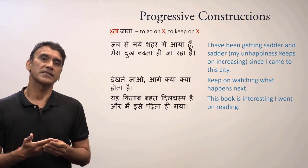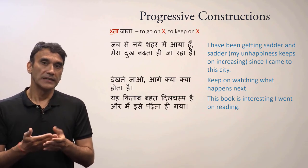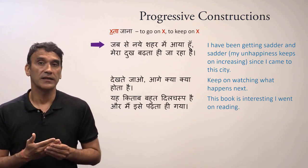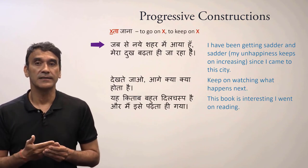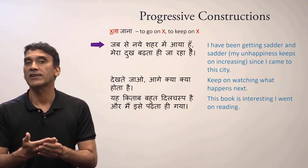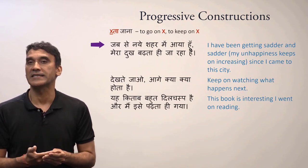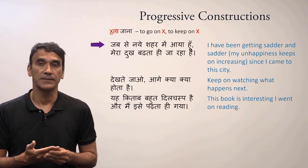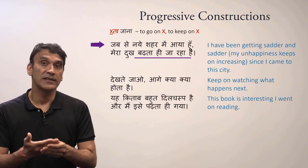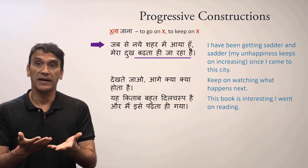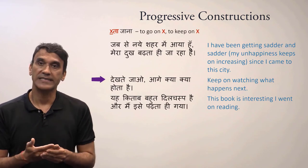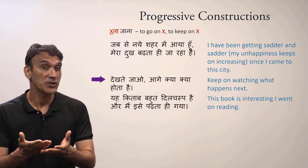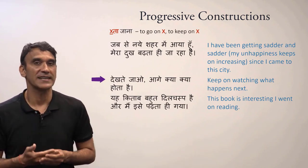Let's take some examples. Jab se nae shahar mein aya hon, mera dukh barta hi ja raha hai - I have been getting sadder and sadder. The literal translation is: my unhappiness keeps on increasing since I came to this city. The part 'keep on increasing' is barta hi ja raha hai. Next example: dekhte jao aage kya hota hai - keep on watching what happens next.